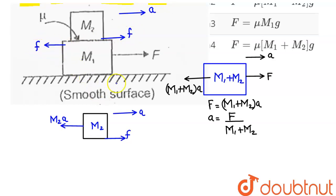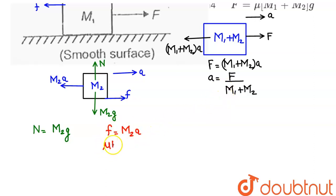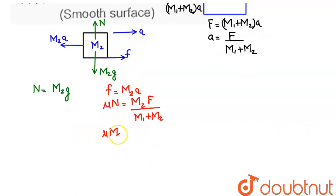The weight m2·g acts downward on m2 and the normal force N acts upward, giving N = m2·g. The friction force on m2 equals m2·a, and substituting a = F/(m1 + m2), we get friction = m2·F/(m1 + m2). Setting this equal to the maximum static friction μN = μ·m2·g, we have: μ·m2·g = m2·F/(m1 + m2).